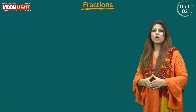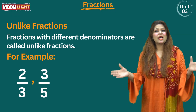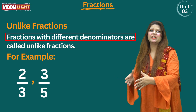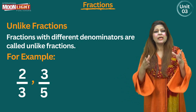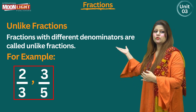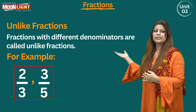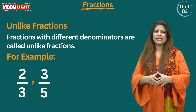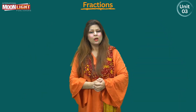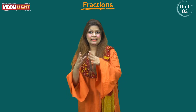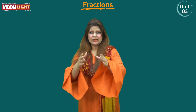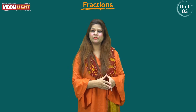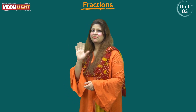Unlike fractions are the opposite — fractions with different denominators are called unlike fractions. For example, 2/3 and 3/5 have denominators 3 and 5, which are different, so these are unlike fractions. I hope the comparison of like and unlike fractions is clear. Take care of yourself and your family. Allah Hafiz.